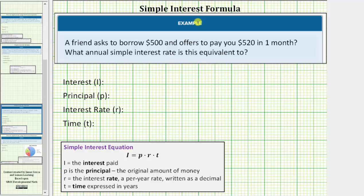We'll be solving this problem using the simple interest formula I equals P times R times T, where I is the interest paid, P is the principal which is the original or starting amount, R is the interest rate and must be a per year rate written as a decimal, and T is the time expressed in years.